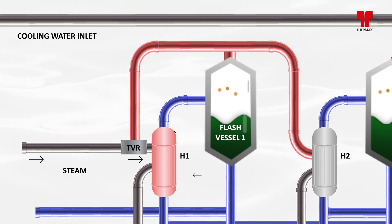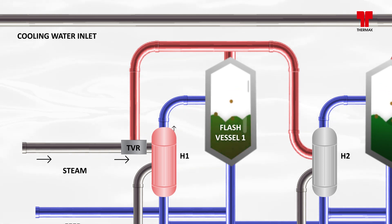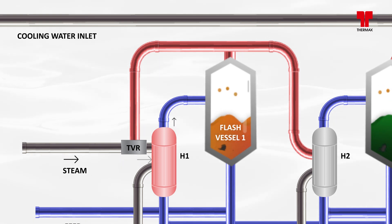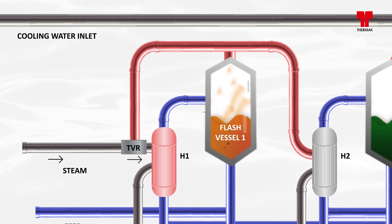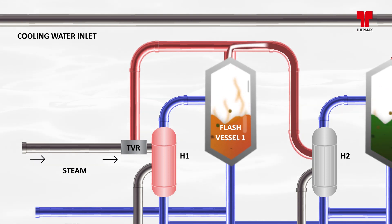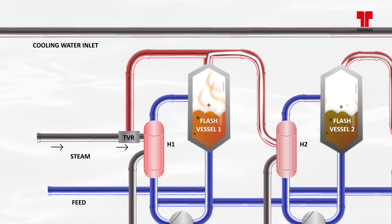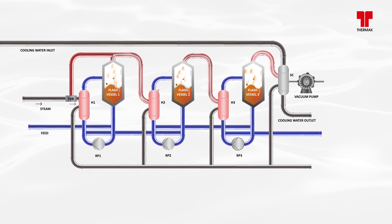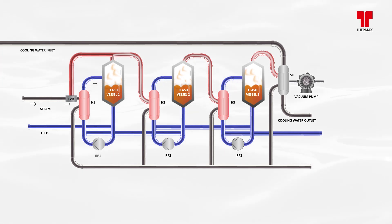This preheated effluent is further heated in the heat exchanger and flashed inside the flash vessel, resulting in vapor generation and concentrating the effluent. This process happens under vacuum. These vapors are effectively used as the heat source to the next vessel, which results in effective and economical usage of the heat source.